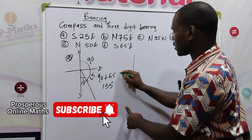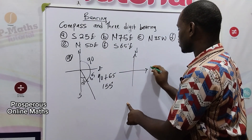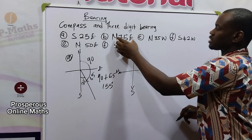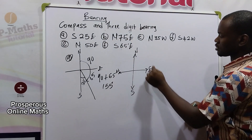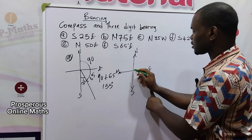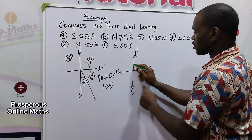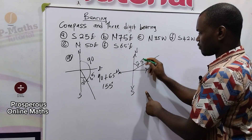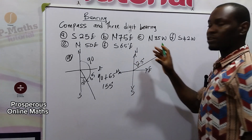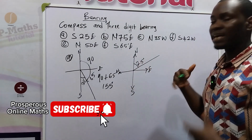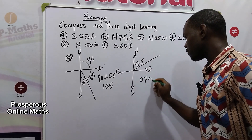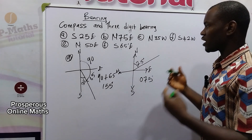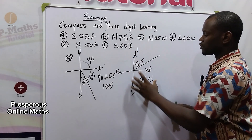For the second one, I'll draw the cardinal points again — north, east, south, and west. I have north east, which is in the first quadrant. The angle 75° has to touch the north pole, so it would be somewhere here. To convert any angle in the first quadrant to three figure bearing, just add a zero to the front. So this becomes 075 degrees. We have successfully converted this to three figures.